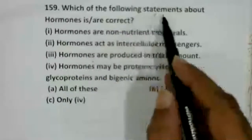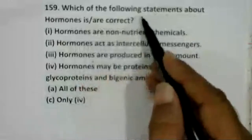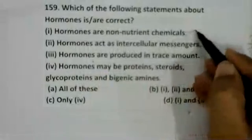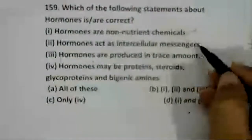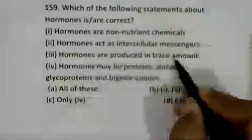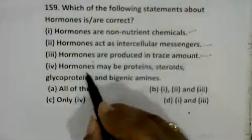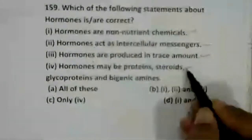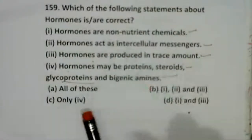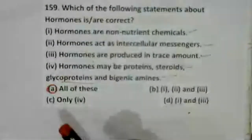Regarding hormones: hormones are non-nutrient chemicals — correct. Hormones act as intracellular messengers — correct. Hormones are produced in trace amounts — correct. Hormones may be proteins, steroids, glycoproteins, or biogenic amines — correct. All statements about hormones are correct.